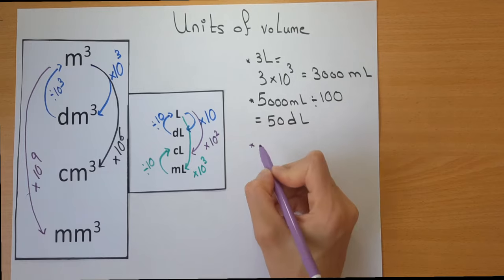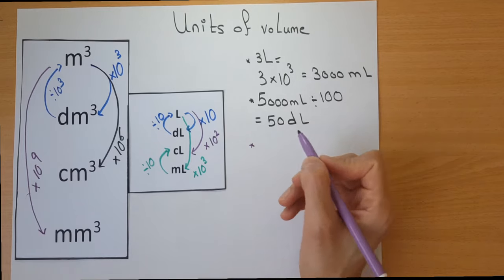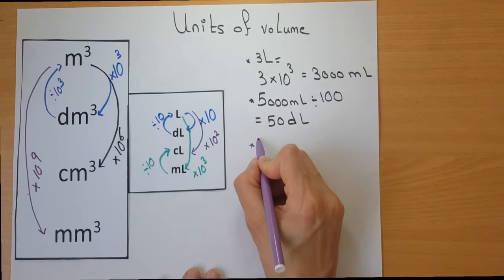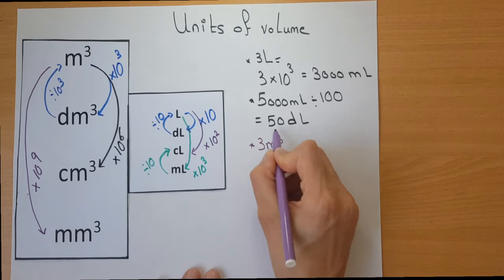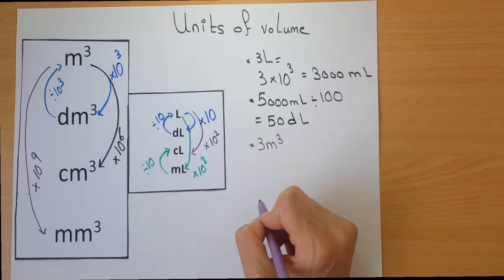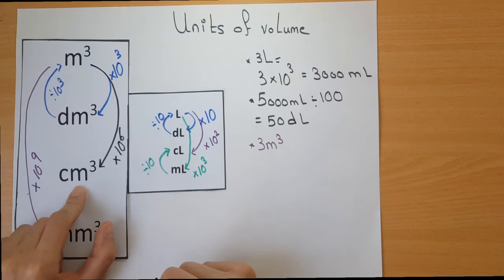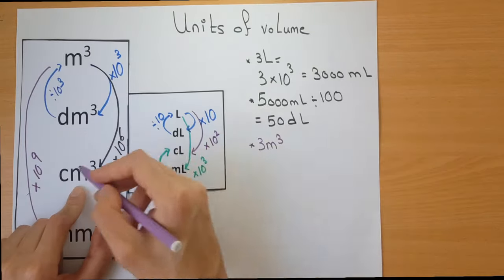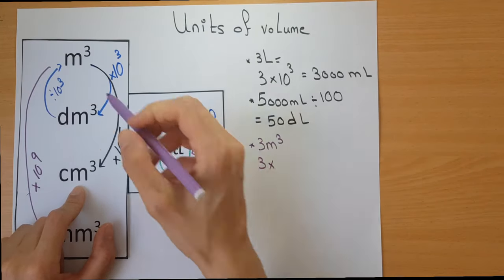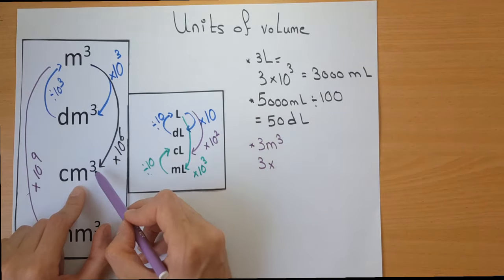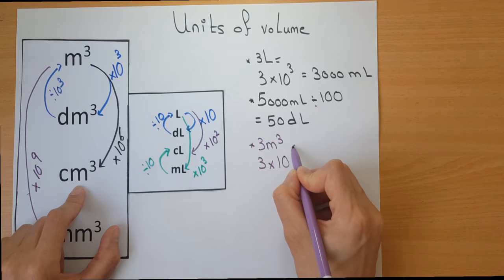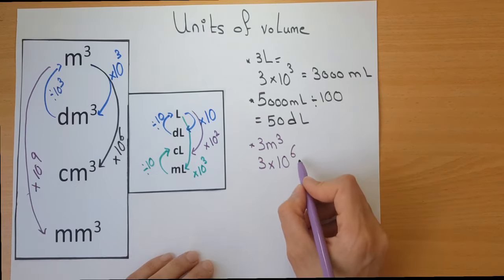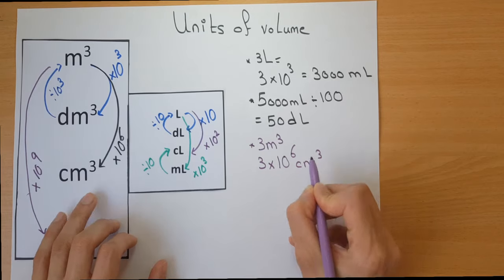Let's take an example. I have 3 meter cube and I want to express this in centimetres cube. Because I'm going down, I multiply. How many steps? Two steps. Each step is times 10 to the power of 3, so the result is times 10 to the power of 6 centimetre cube.